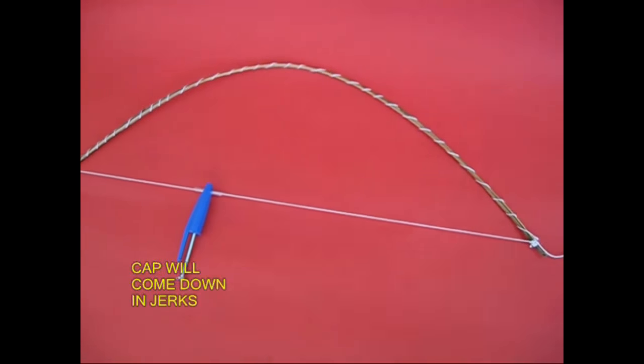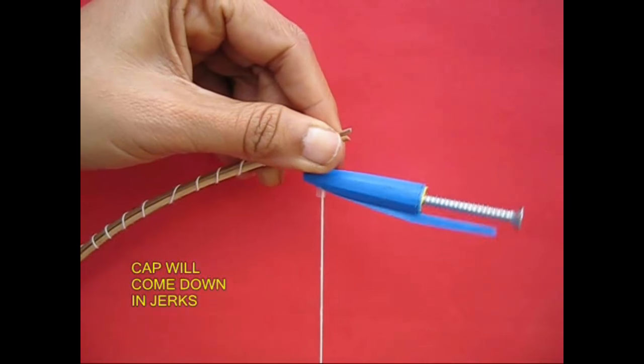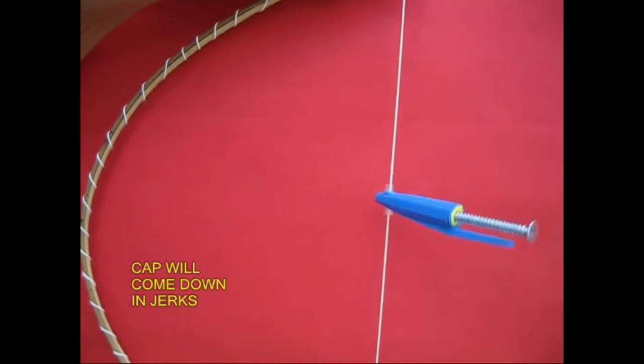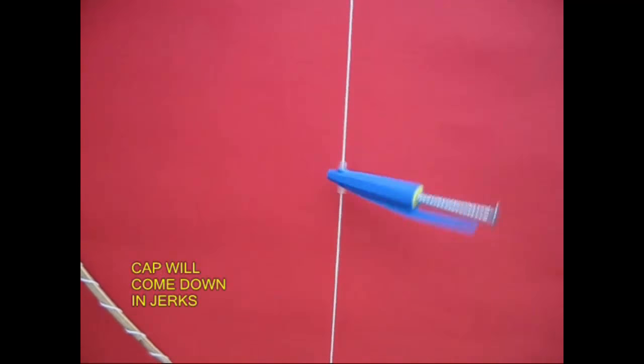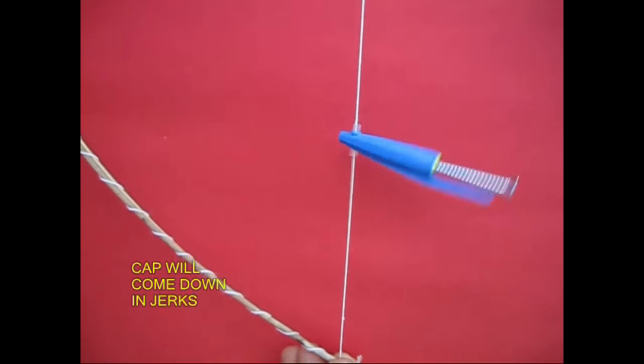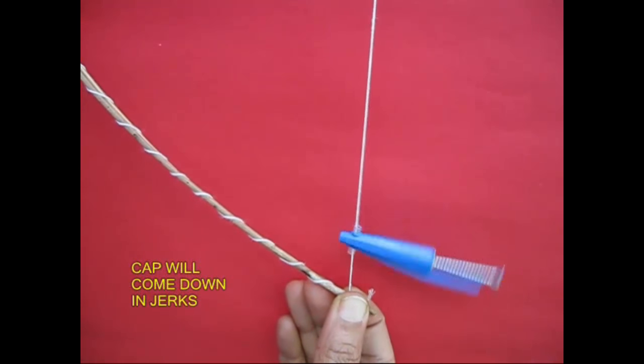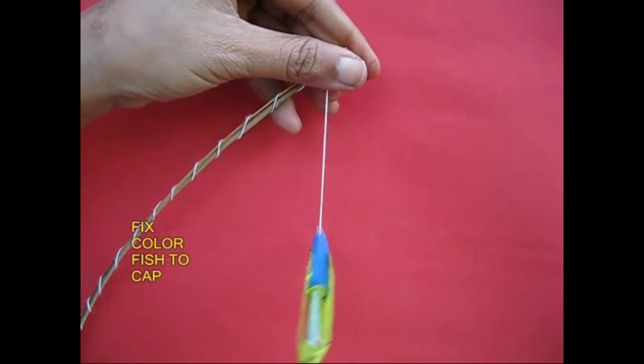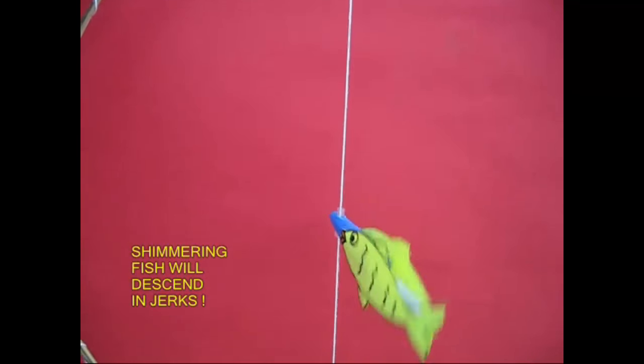Now we have to put the cap, take our thread, and put it in. If you don't have thread, you can't put it in. That is the shimmering fish.